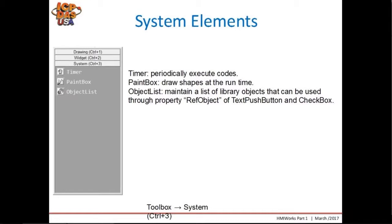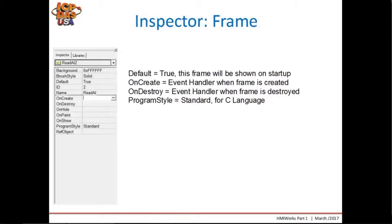Finally, the third section has the system objects: the Timer, which will periodically execute code; Paint Box, which will draw shapes at runtime; and Object List, to maintain a list of library objects that can be used through the property reference of Text Push Button and Checkbox.